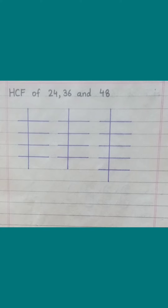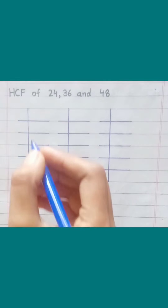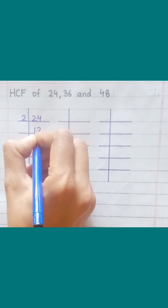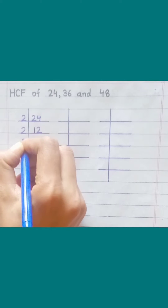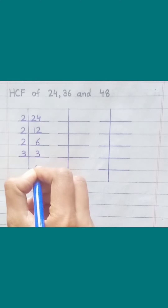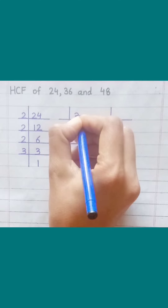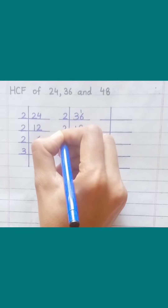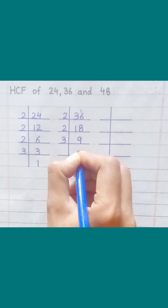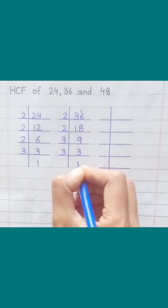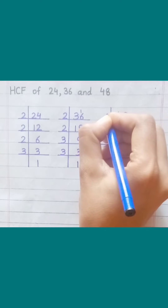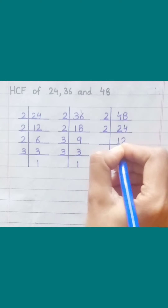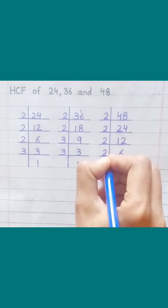HCF of 24, 36, and 48. For 24: two ones are two, two twos are four, two sixes are twelve, two threes are six, three ones are three. For 36: two ones are two, two eights are sixteen, two nines are eighteen, three threes are nine, three ones are three. For 48: two twos are four, two fours are eight, two ones are two, two twos are four, two sixes are twelve, two threes are six, three ones are three.